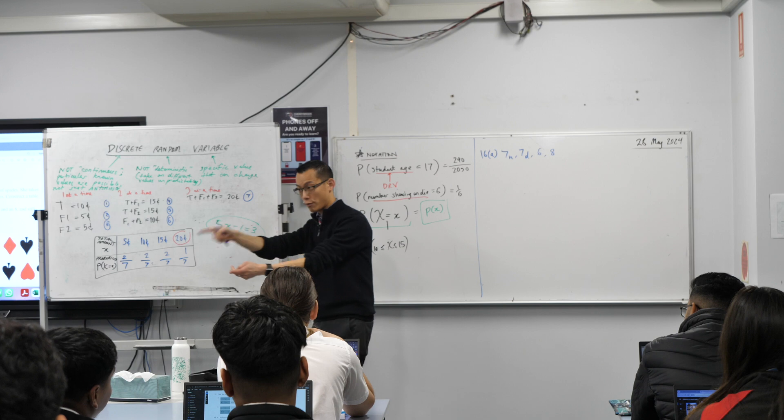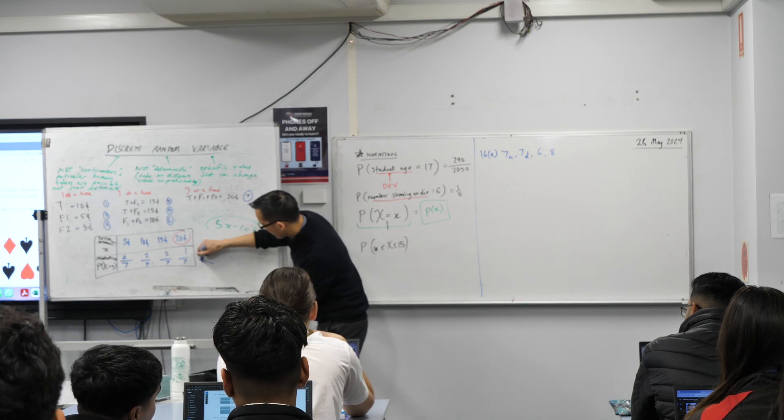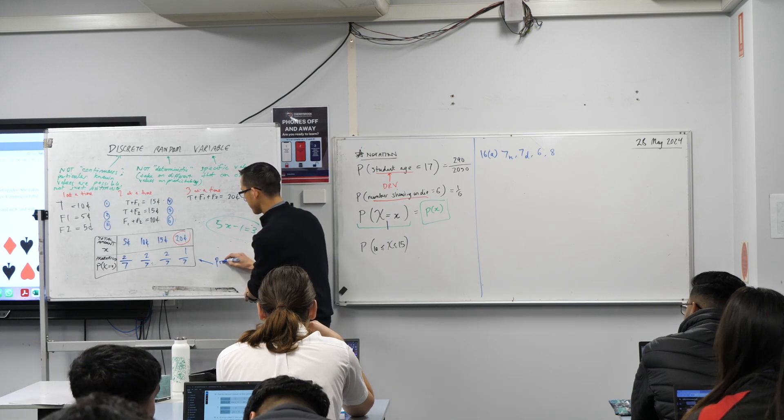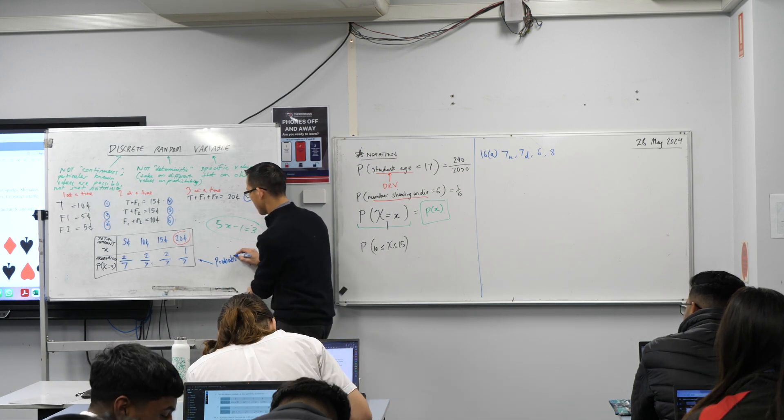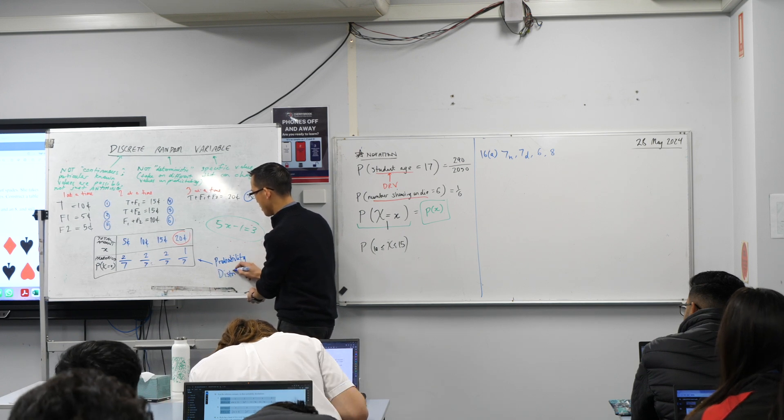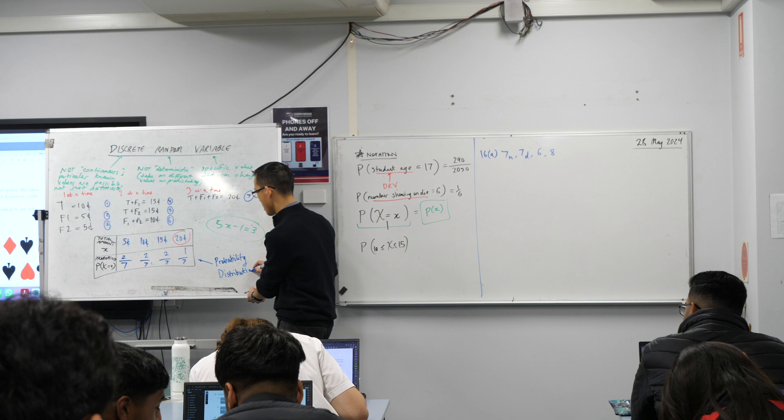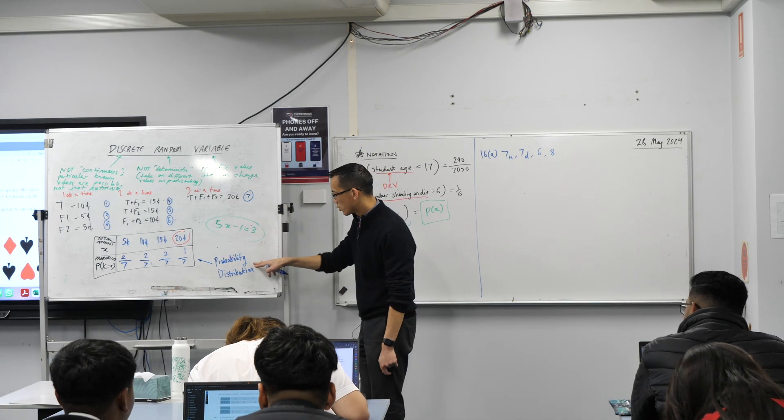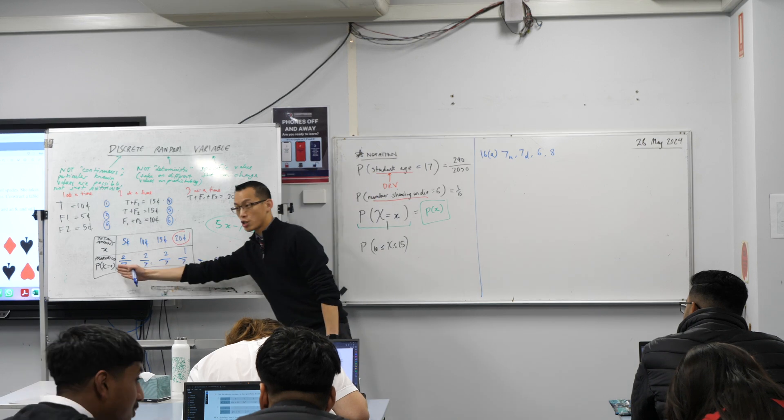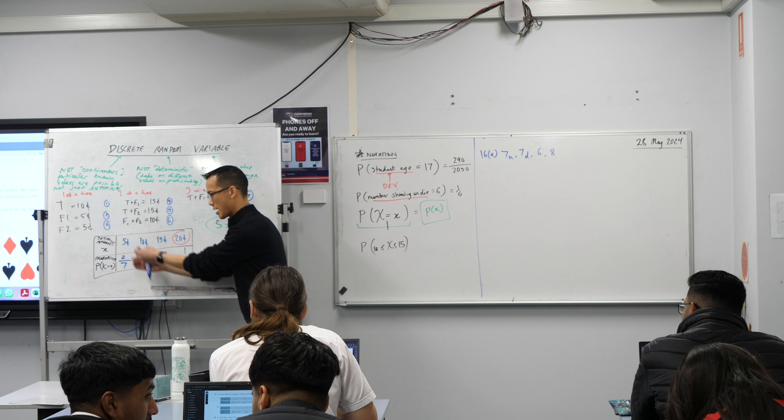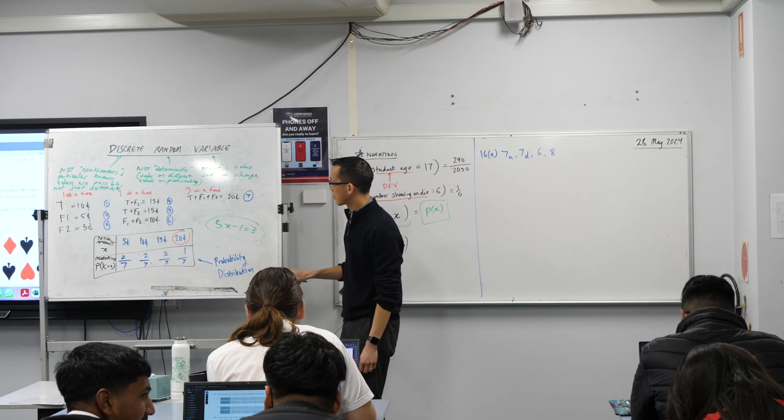So this table that you've already drawn up, put like an arrow toward it, this thing is called a probability distribution. Thankfully, this thing is exactly what it says on the tin, right? What does this table tell you? It tells you how the probabilities are distributed among the different options. It's like, oh, how much probability does this one have? How much probability does this one have? It's distributing them across.